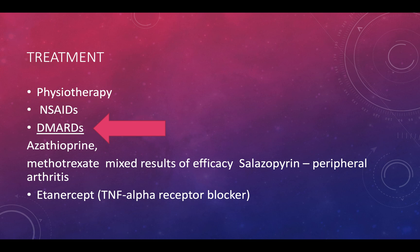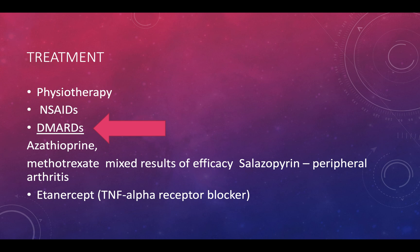Treatments include physiotherapy, NSAIDs to control pain and stiffness, and DMARDs — particularly azathioprine, methotrexate, and sulfasalazine, with methotrexate being the most commonly used. There is also a TNF-alpha receptor blocker category, known as etanercept. In stage one, with minimal stiffness for approximately three months, start physiotherapy and NSAIDs. In stage two, with bamboo spine on x-ray, severe SIJ sclerosis, and severe bilateral sacroiliitis, add a DMARD such as methotrexate to the regimen.